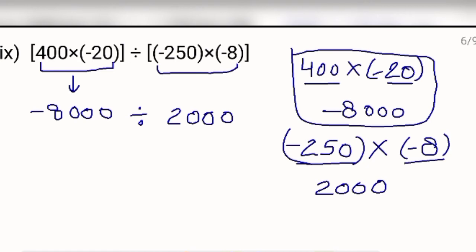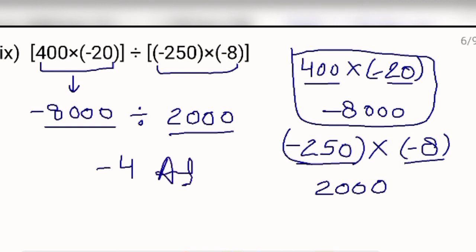Now, the first result is of minus sign and the second is of plus sign, so the answer will be negative. Divide 8000 by 2000 — 2 fours are 8, so after dividing you get 4. The sign will be negative, so the answer is minus 4.